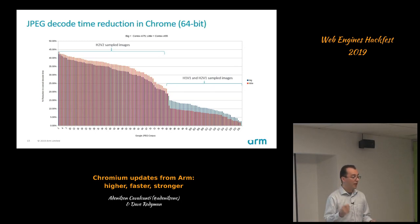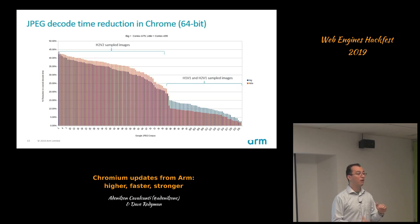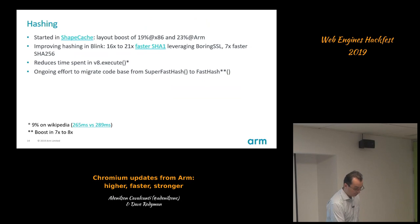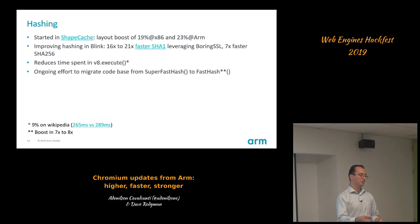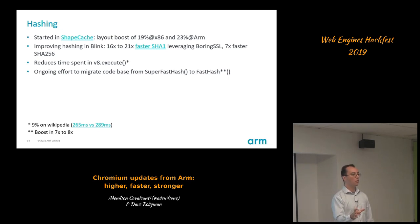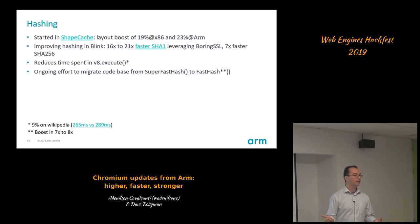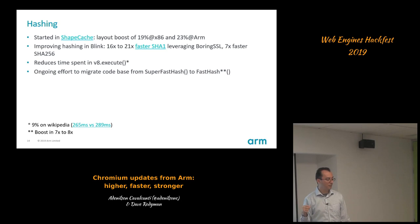I started looking into hashing. When performing layout rendering of a web page, you have to perform text shaping, which is done by HarfBuzz. Since it's an expensive operation, Blink has a shape cache storing already-shaped words. Just by changing the hash function used there to something better, when loading a page like Wikipedia which has lots of words, we had a gain of 23% on ARM and about 19% on x86.